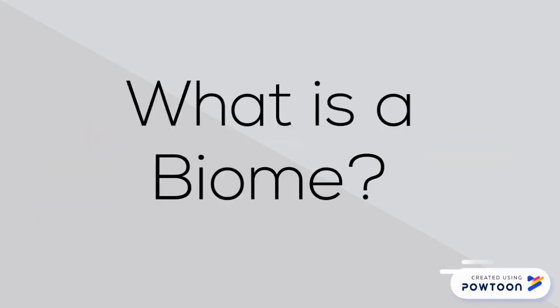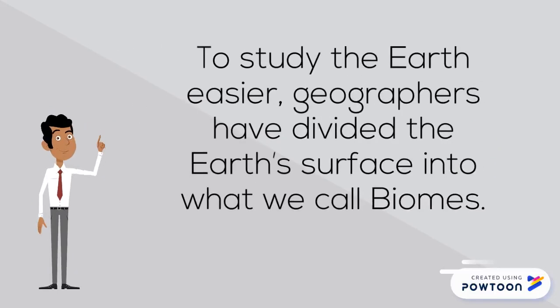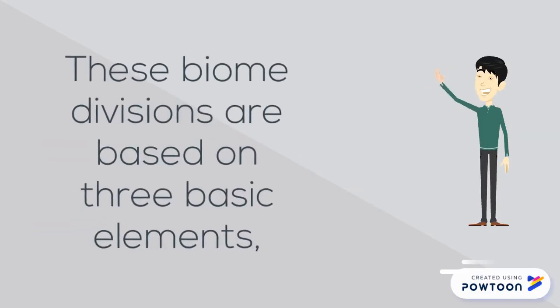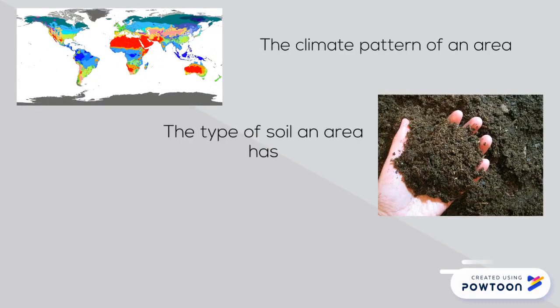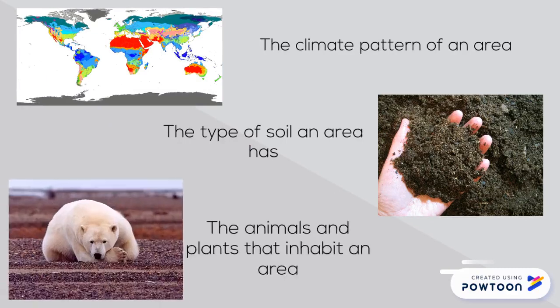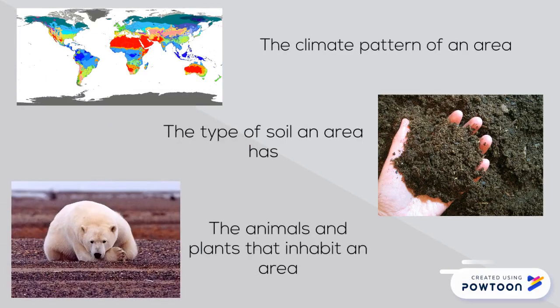Geography Minute. What is a biome? To study the Earth easier, geographers have divided the Earth's surface into what we call biomes. These biome divisions are based on three basic elements: the climate pattern of an area, the type of soil an area has, and the animals and plants that inhabit an area.